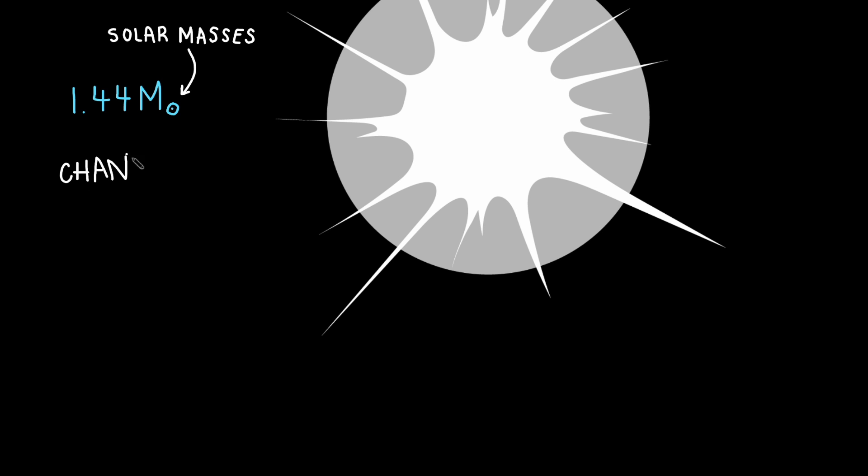So while gravity was pressing in on the star, forcing it to want to collapse, electron degeneracy pressure was pushing back. But at some point, it can't do that anymore, and so the star collapses. This threshold, 1.4 solar masses, is known as the Chandrasekhar limit.